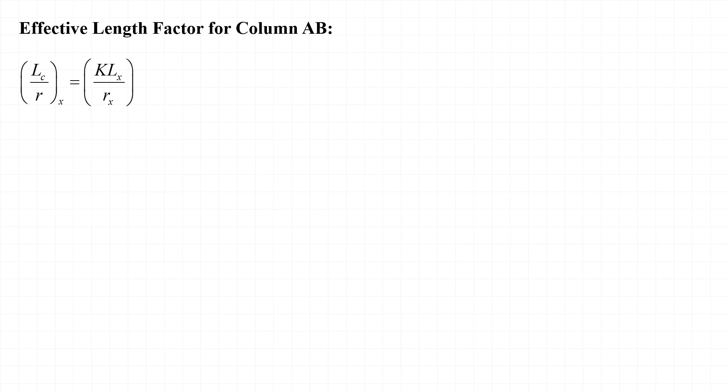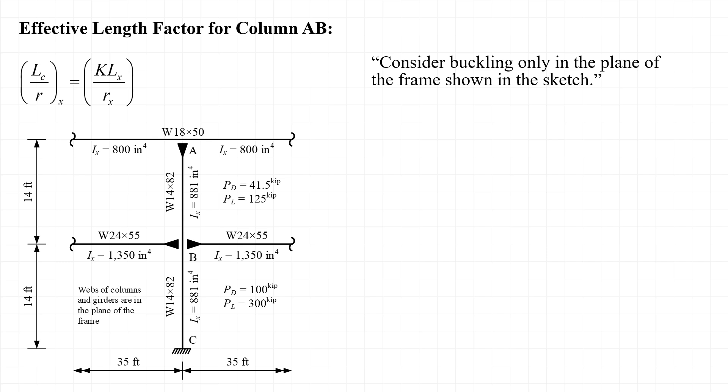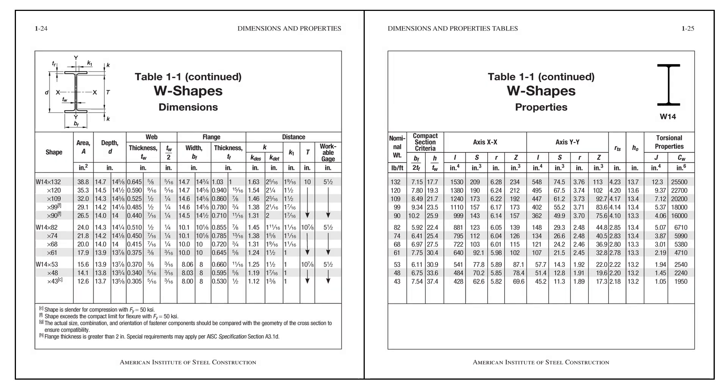The next step is to calculate the effective slenderness ratio, KL over R, for the column. The problem statement instructed us to consider buckling only in the plane of the frame shown in the sketch. And the sketch indicates both that the webs of the columns and the girders are in the plane of the frame and that the columns are bent about their X axis in the plane of the frame. Thus, we need to calculate KL over R with respect to the strong axis. When we look up the strong axis or X axis radius of gyration in part one of the AISC manual, we find that R sub X is equal to 6.05 inches for the W14 by 82.